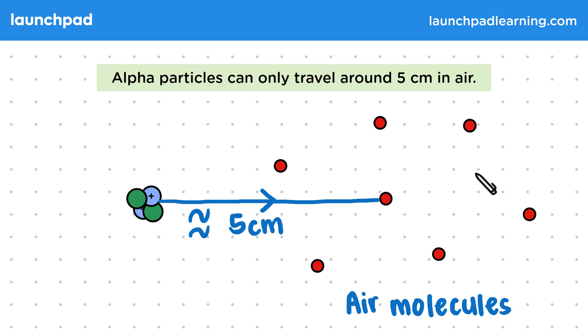Even if air molecules don't come into contact with the alpha particle, its strong electromagnetic forces are still enough to make them lose electrons. So around the point that the alpha particle managed to reach, most of the air molecules will be ionised.